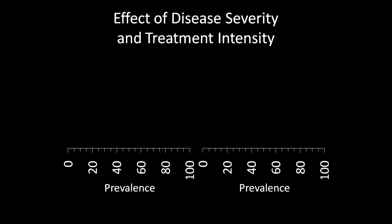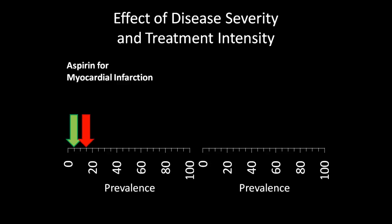Where you put these treatment and testing thresholds depends on disease severity and treatment intensity. For example, if we talk about giving aspirin to patients with heart attacks, our testing threshold would be very low. If a patient comes into the emergency room with chest pain, most people would go ahead and run certain tests to make sure they're not missing a heart attack, because missing a heart attack is a big deal. The treatment threshold in this case is also fairly low — it's not a big deal to give somebody an aspirin, but it could potentially save their life, so we may give the aspirin fairly early.